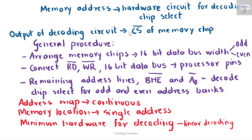As a good and efficient interfacing practice, the address map of the system should be continuous as far as possible — that is, there should be no windows in the map and no foldback space should be allowed. A memory location should have a single address corresponding to it, that is, absolute decoding should be preferred and minimum hardware should be used for decoding. In a number of cases, linear decoding may be used to minimize the required hardware.